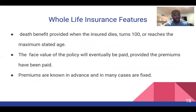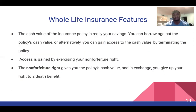For whole life insurance, the death benefit is provided when the insurer dies, turns 100, or reaches the maximum stated age. The face value of the policy will eventually be paid provided premiums have been paid, and the premiums are known in advance and in many cases are fixed. The cash value of the insurance policy is essentially your savings. You can borrow against the policy's cash value, or gain access to the cash value by terminating the policy using your non-forfeiture right, which gives you the cash value in exchange for giving up your right to the death benefit.